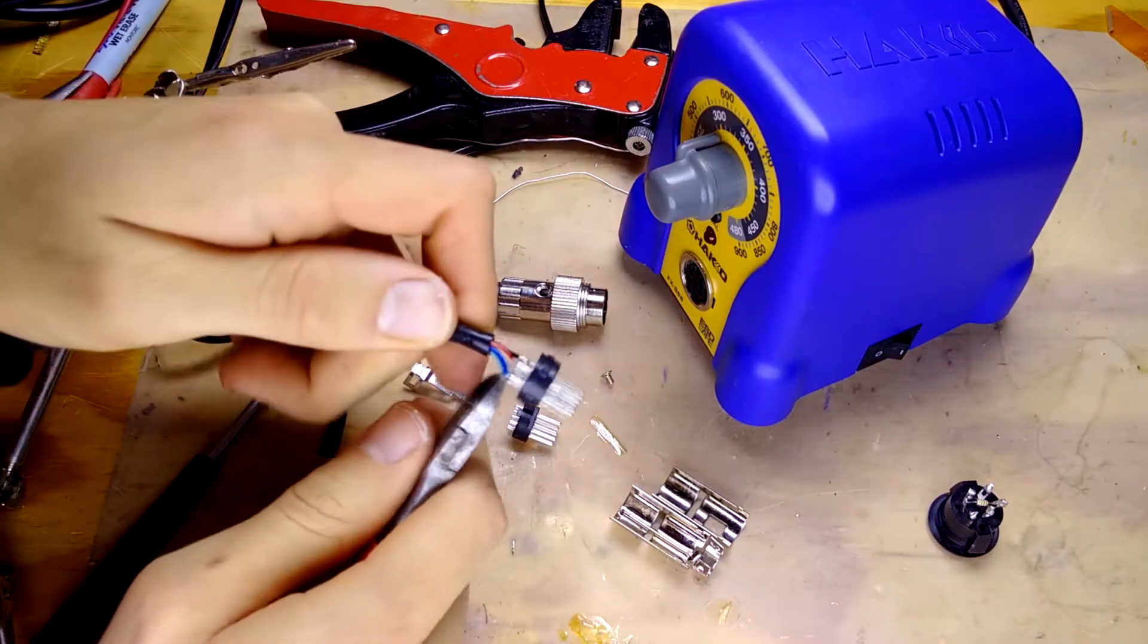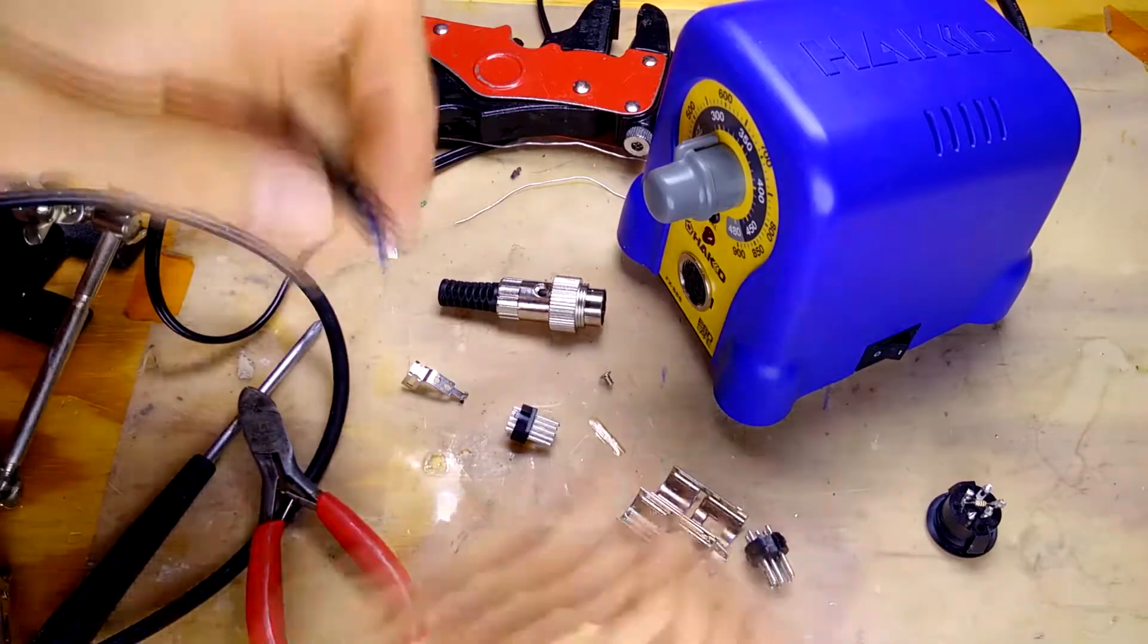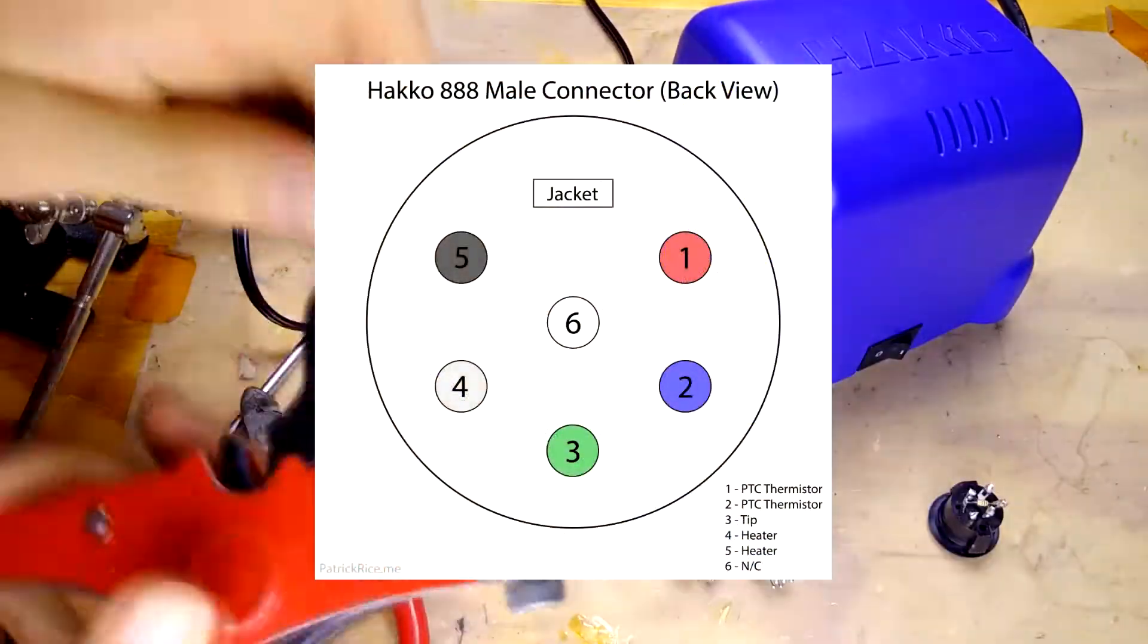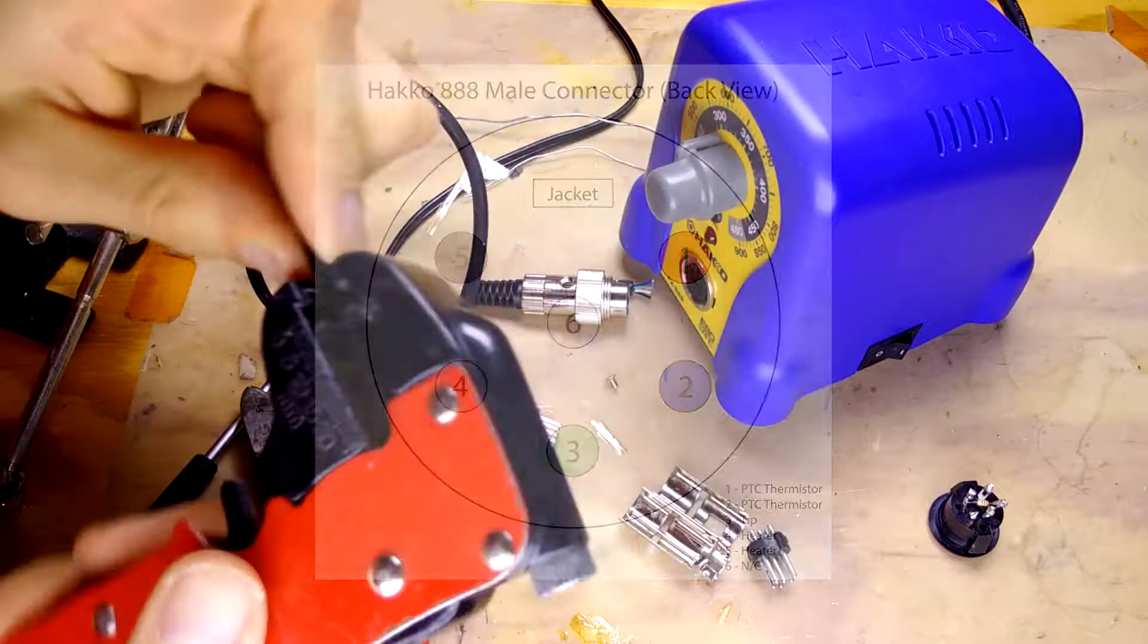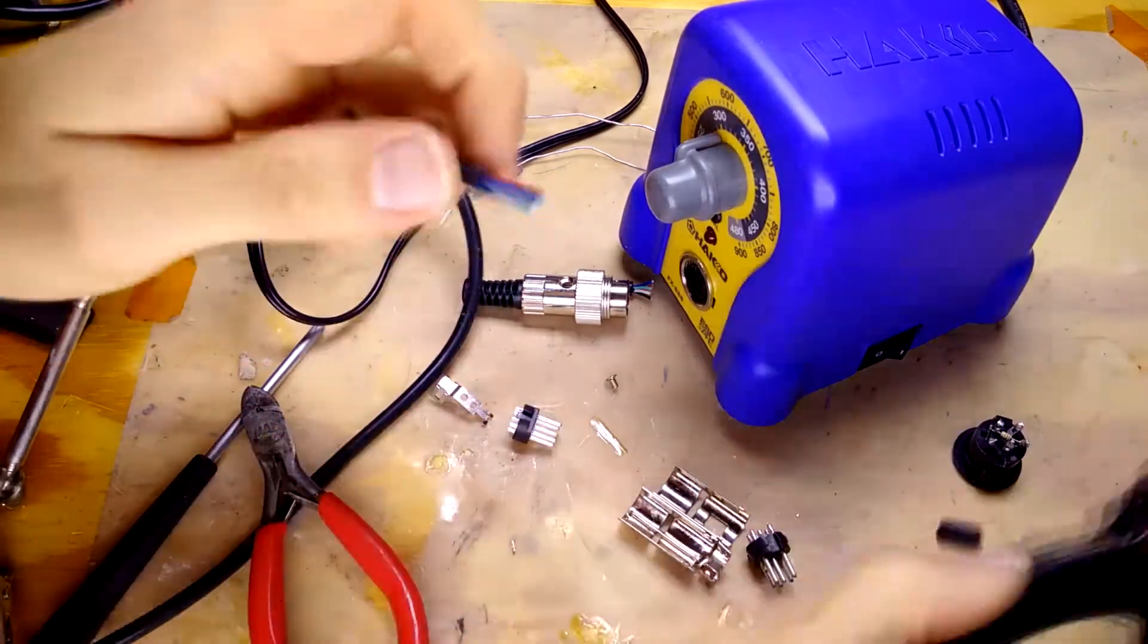Now onto the wire connector. I desoldered the original connector after creating a wiring diagram. Stripping the casing and the wiring, I soldered the new connector.